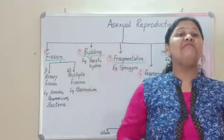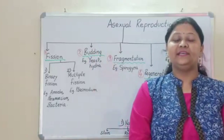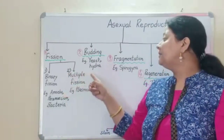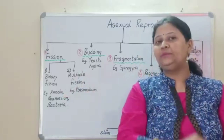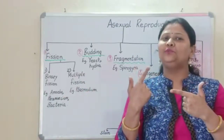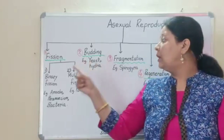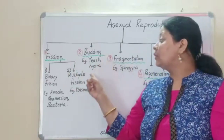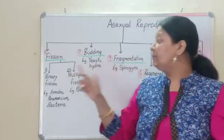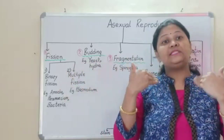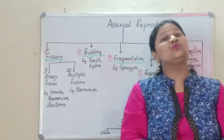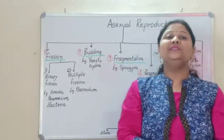The very first process is fission — F-I-S-S-I-O-N. Fission means breaking down, and it is of two types: binary fission and multiple fission. Just concentrate on the literal meaning of the word. Binary means two, and multiple means many. So binary fission means from the parent cell, two daughter cells will be formed, which is exactly what binary fission means, as I will explain through the diagram.